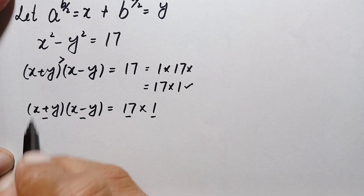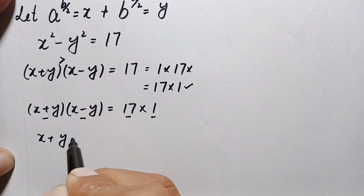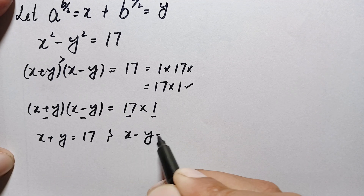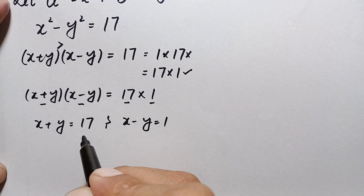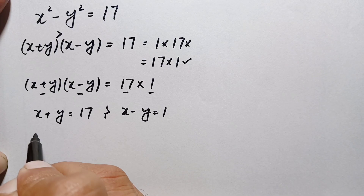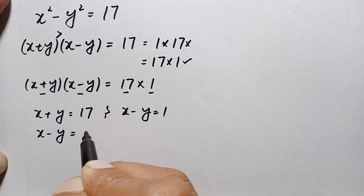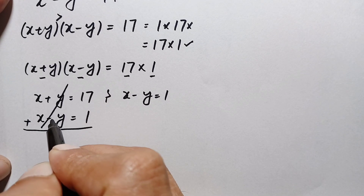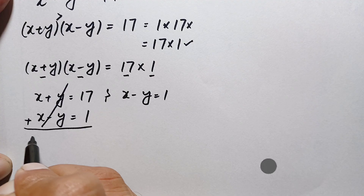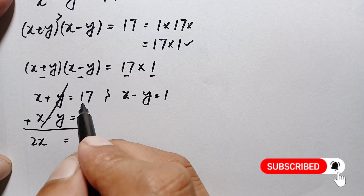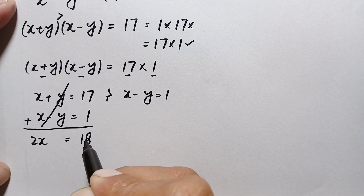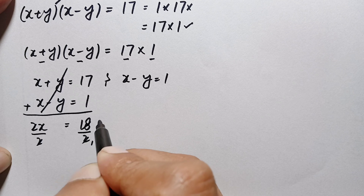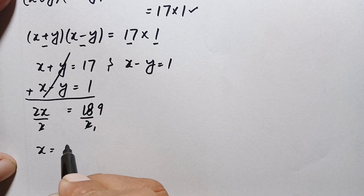This gives us two equations: x plus y equals 17, and x minus y equals 1. Adding both equations, the y terms cancel, giving 2x equals 17 plus 1, which is 18. Dividing both sides by 2, x equals 9.